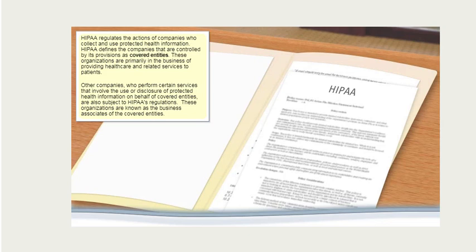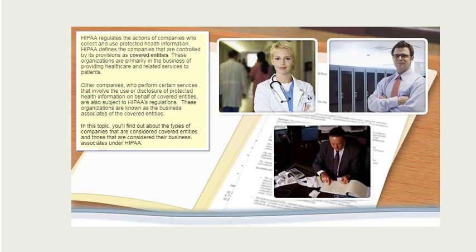HIPAA regulates the actions of companies who collect and use protected health information. HIPAA defines the companies that are controlled by its provisions as covered entities — these organizations are primarily in the business of providing health care and related services to patients. Other companies who perform certain services involving the use or disclosure of protected health information on behalf of covered entities are also subject to HIPAA's regulations, known as business associates of the covered entities.